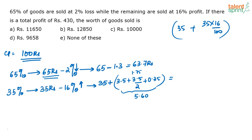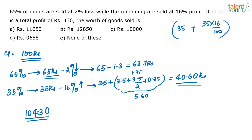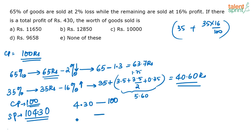So total selling price is 63.7 plus 40.60, which equals 104.30 rupees. The actual cost was 100 rupees, so I am getting a profit of 4.30 rupees. This means when the cost price is 100, the profit is 4.30 rupees.